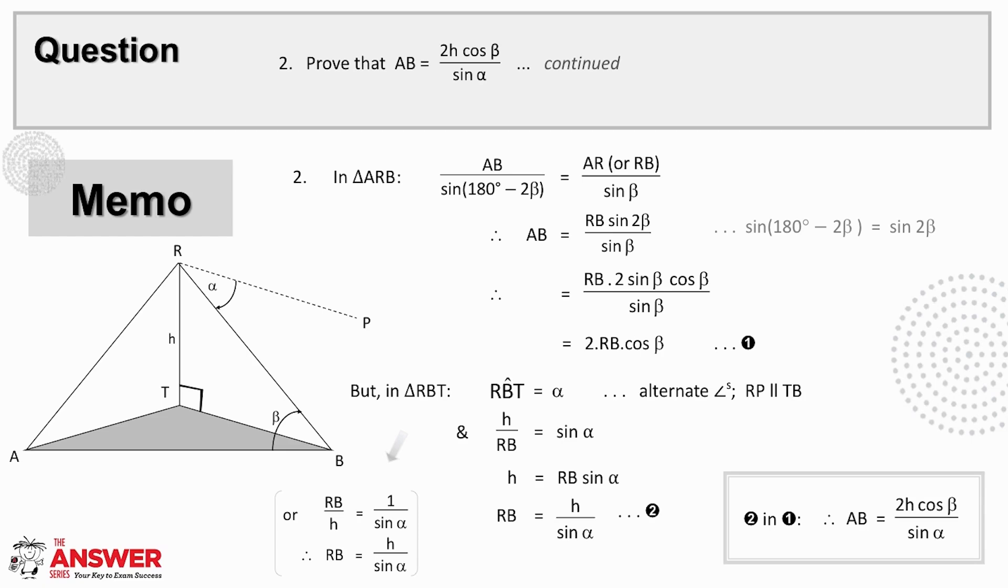So having found an equation for AB in terms of RB, next we then need to find an equation for this linking side RB. We use that the angle of depression here is alpha, which means this angle here is alpha because of alternate angles. And this then means that we can use our 90 degree triangle RTB to state that H over RB is sine of alpha. And from here we can make RB the subject of the equation by first multiplying through by RB and then dividing through by sine alpha.